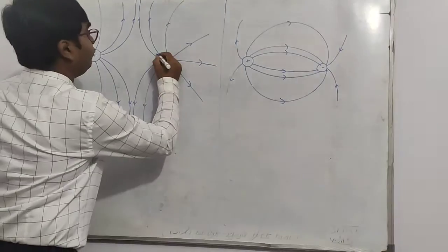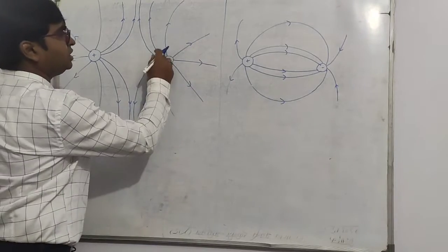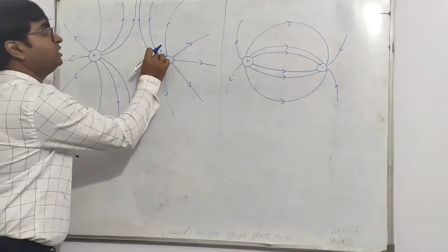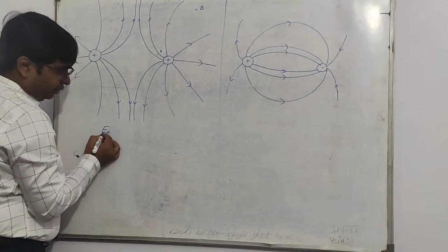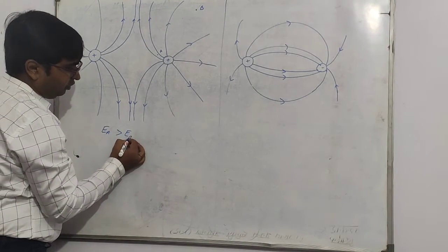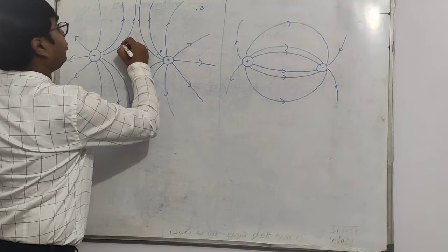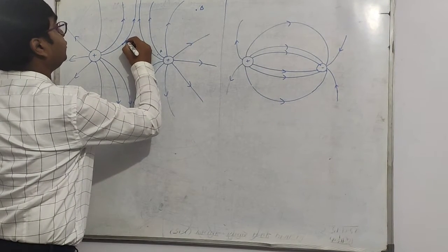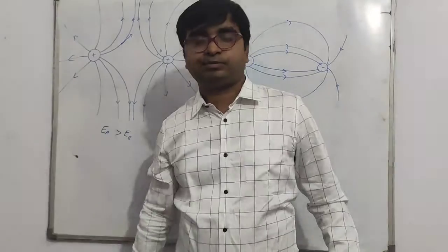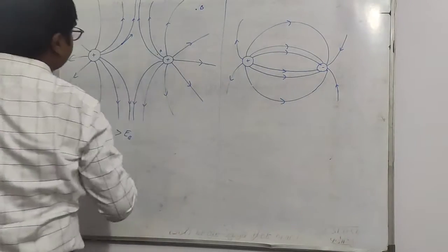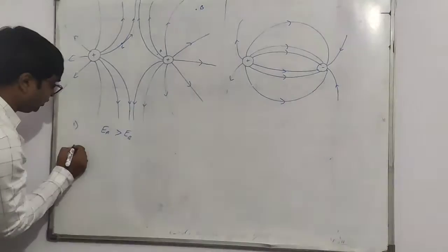At a point where a larger number of field lines cross a pilot surface area, the magnitude of the electric field is large. At another point where fewer lines cross, the magnitude is less. So the electric field magnitude at point A is always greater than the electric field magnitude at point B. To find the direction at that point, we draw a tangent on the field lines.